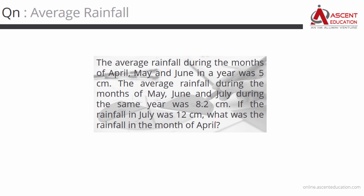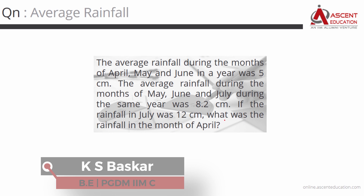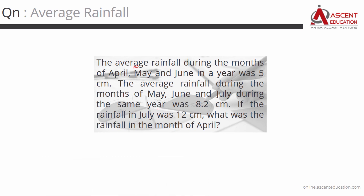Let's start with an easy question. The average rainfall during the months of April, May, and June in a year was 5 centimeters. The average rainfall during the months of May, June, and July during the same year was 8.2 centimeters. Rainfall in July was 12 centimeters. Find the rainfall in April.